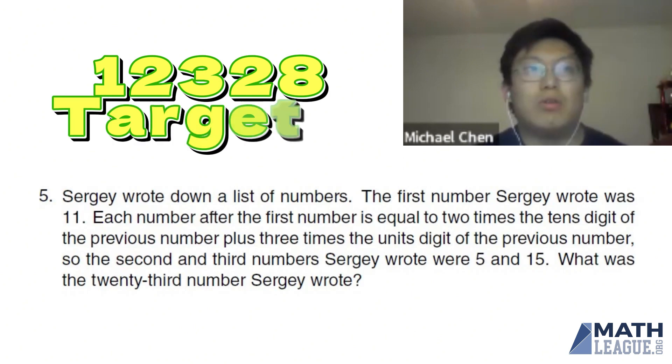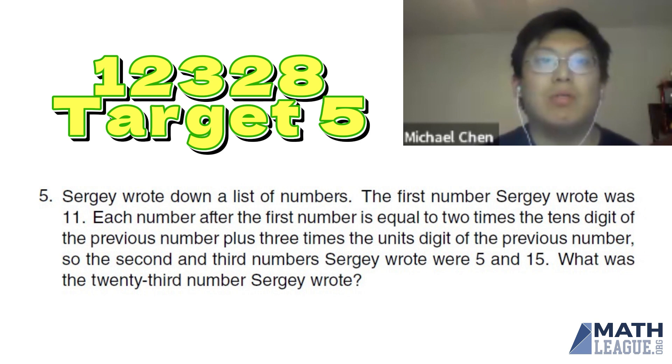We have number five. Sergey wrote down a list of numbers. The first number that he wrote down was 11. Each number after the first number is equal to two times the tens digit of the previous number, plus three times the units digit of the previous number.